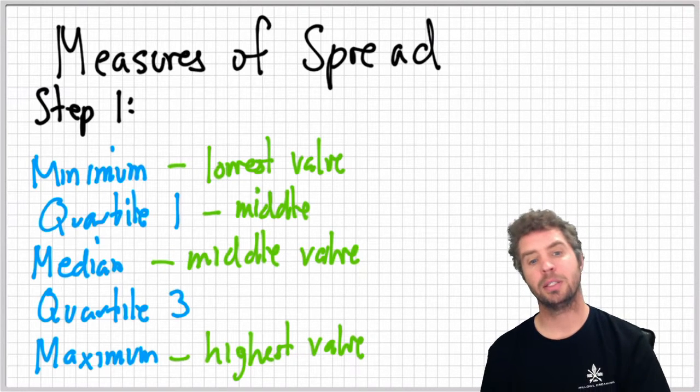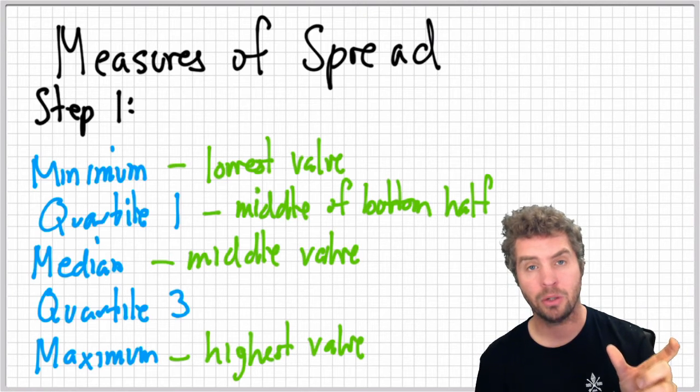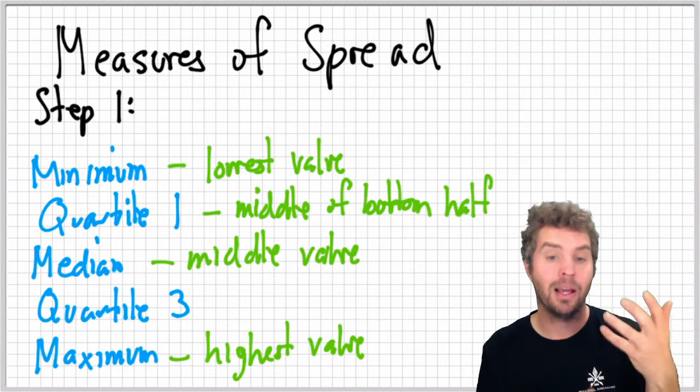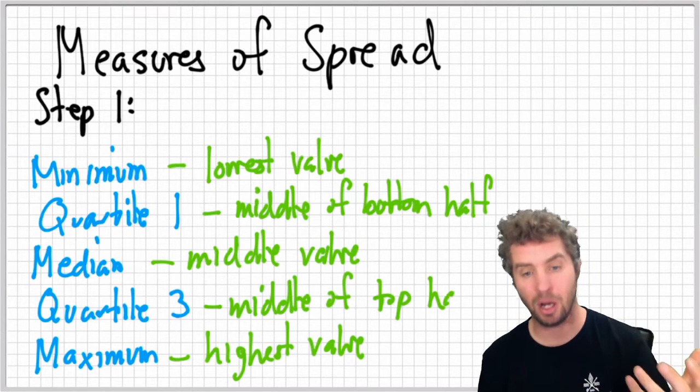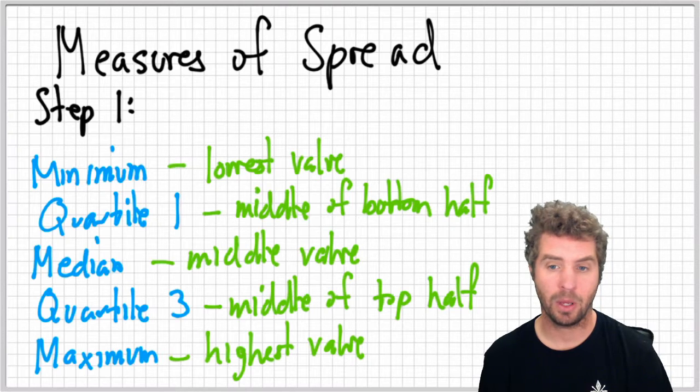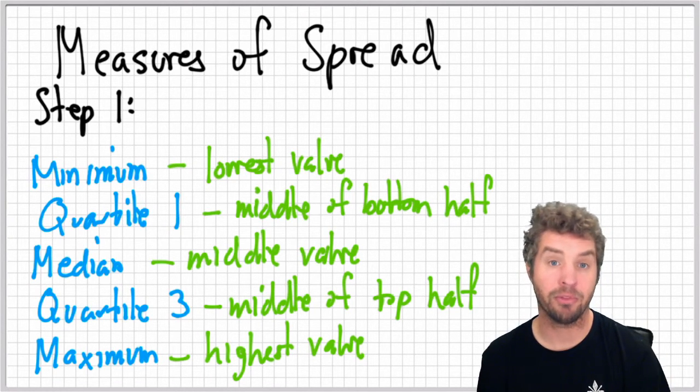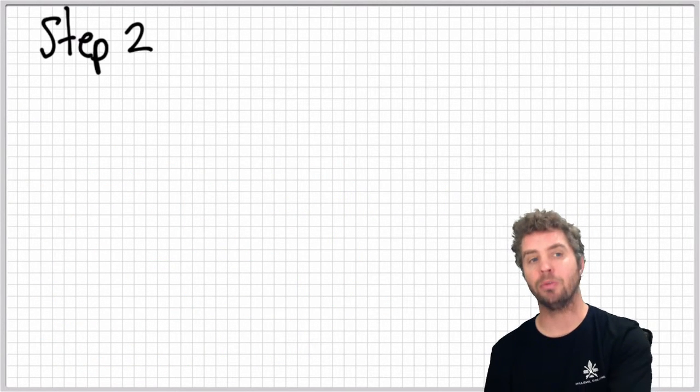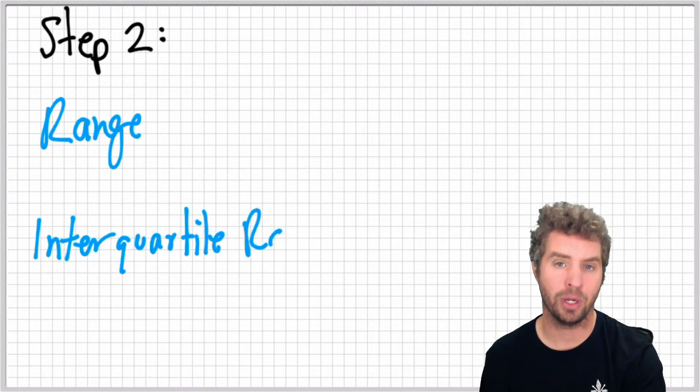Quartile one is the middle of the bottom half of the data. So if you take the bottom half of the data and you find the median of that, that's quartile one. Likewise, quartile three is the middle of the top half of your data. Once you have, and we'll do an example of finding these in just a minute, once you have those, though, you can do step two and find the range and the inner quartile range.